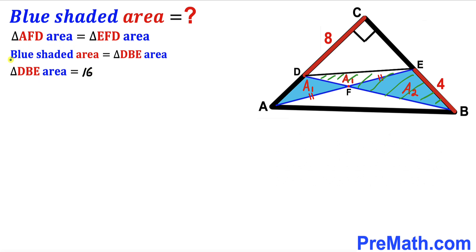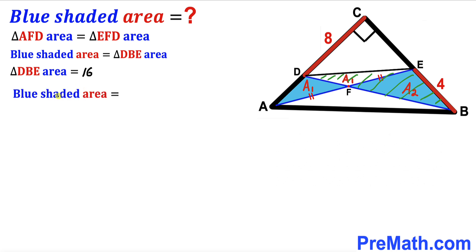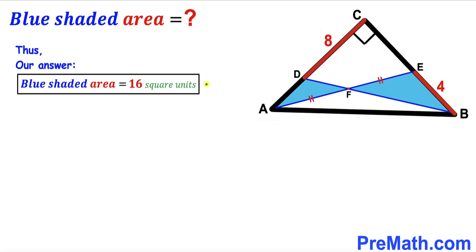Since the blue shaded region area equals the area of triangle DBE, and the DBE area is 16, we conclude that the blue shaded region area is 16 square units. After all the calculations and manipulations, the area of the blue shaded region turns out to be 16 square units.